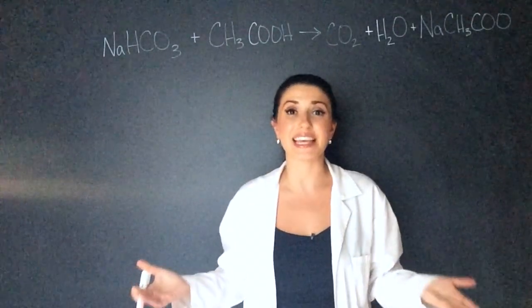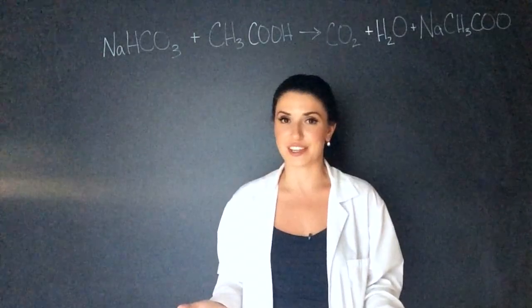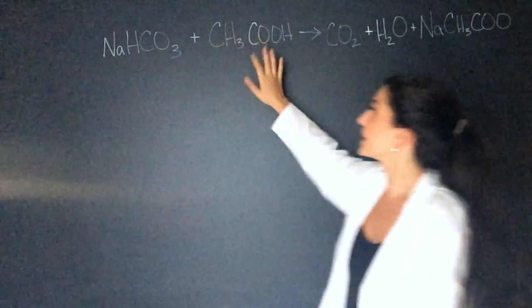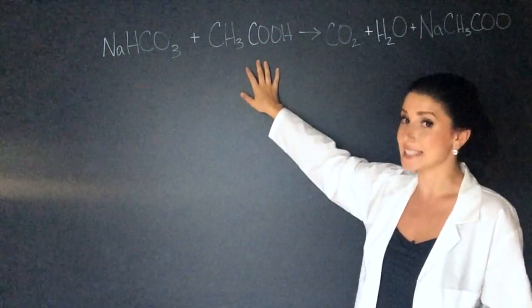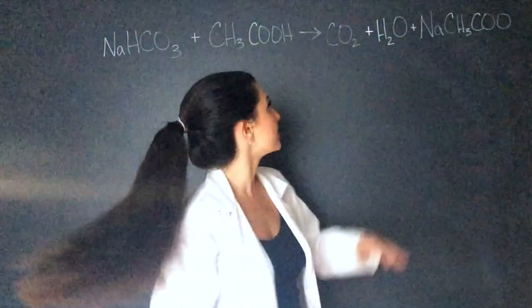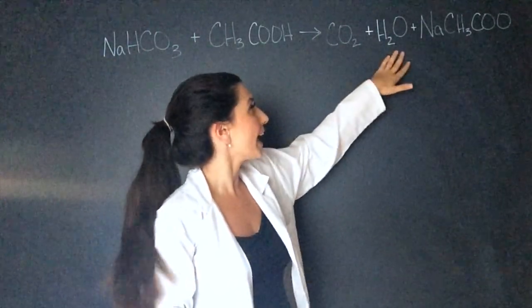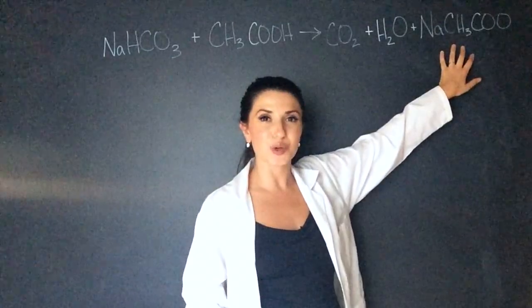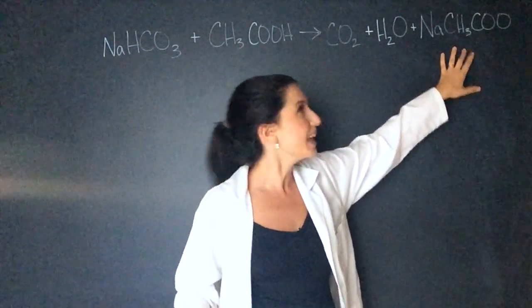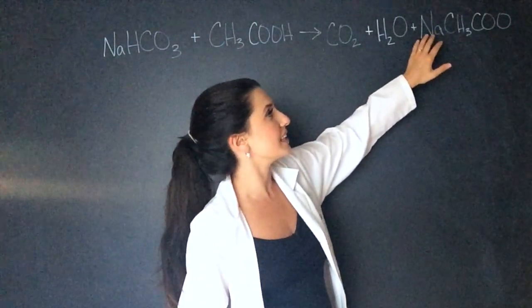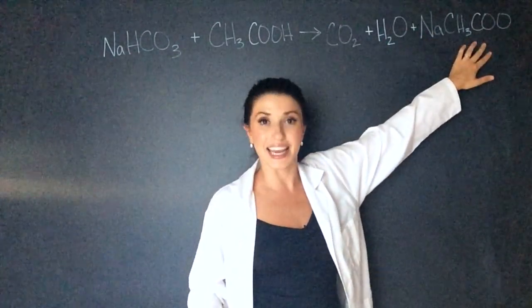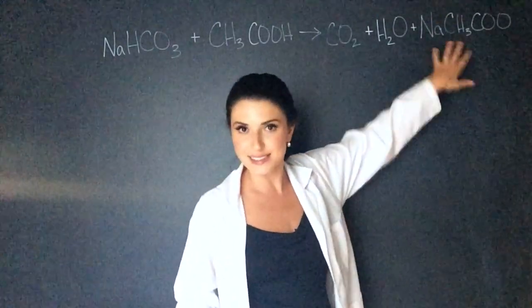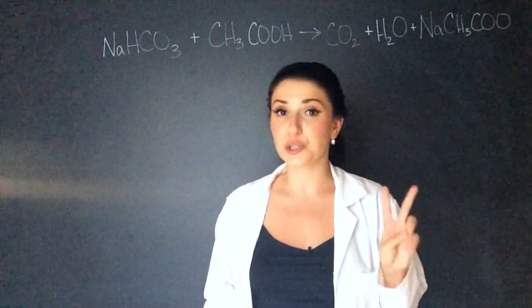Behind me is the chemical equation for the baking soda vinegar experiment. Here we have baking soda or sodium bicarbonate. Over here we have vinegar or acetic acid, and that gives us carbon dioxide CO2, H2O water, and then this strange molecule which is actually sodium acetate, but more technically it's actually the sodium ion and the acetate anion in an aqueous solution, but we just write it like this. This reaction actually occurs in two steps.